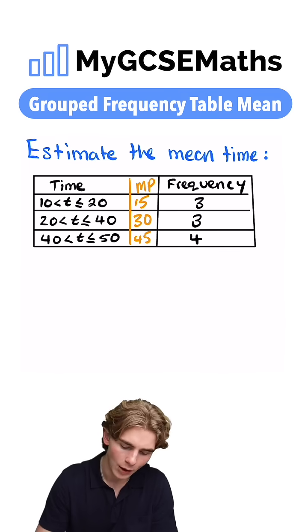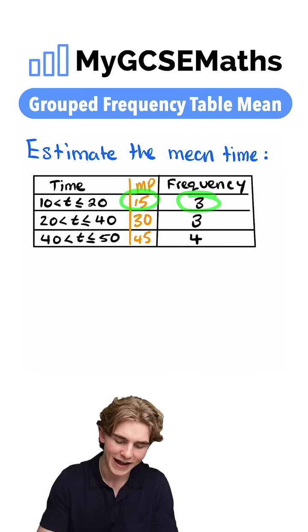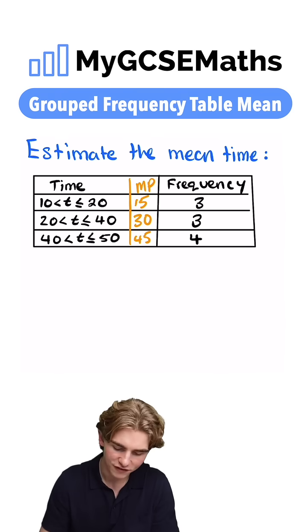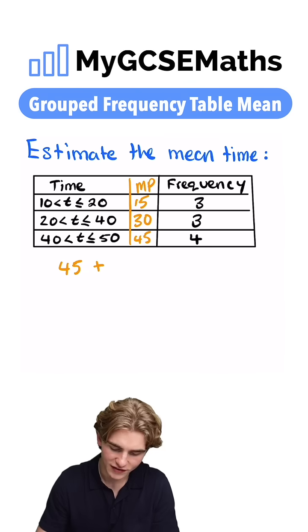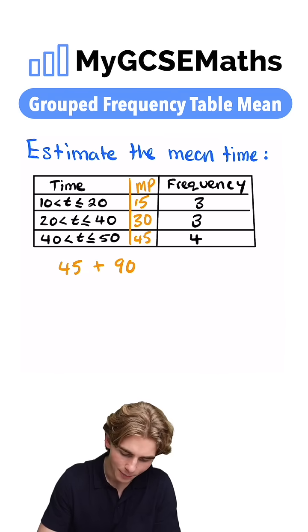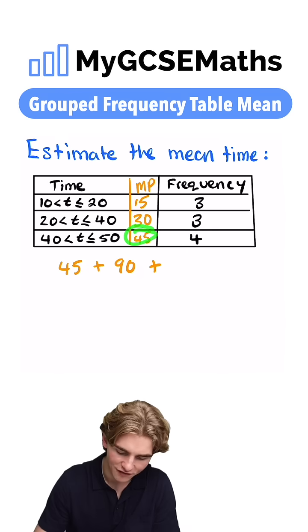Next, we're going to multiply our midpoints by our frequencies and add all of them together. So 15 times 3 is 45, plus 30 times 3 is 90, plus 45 times 4 is 180.